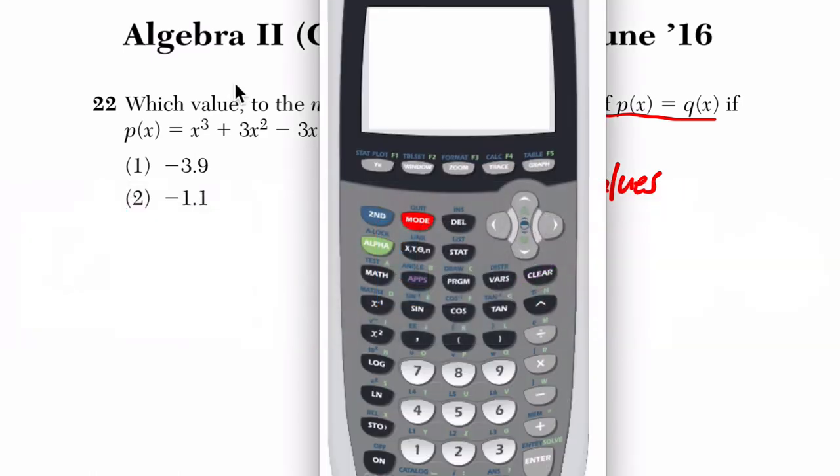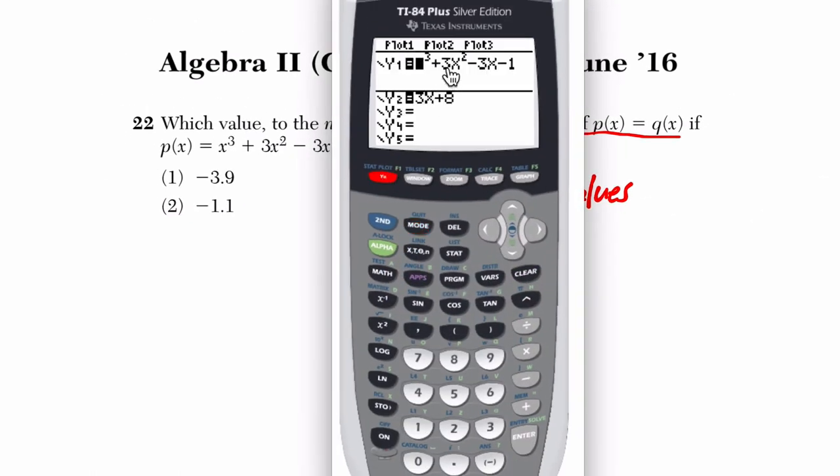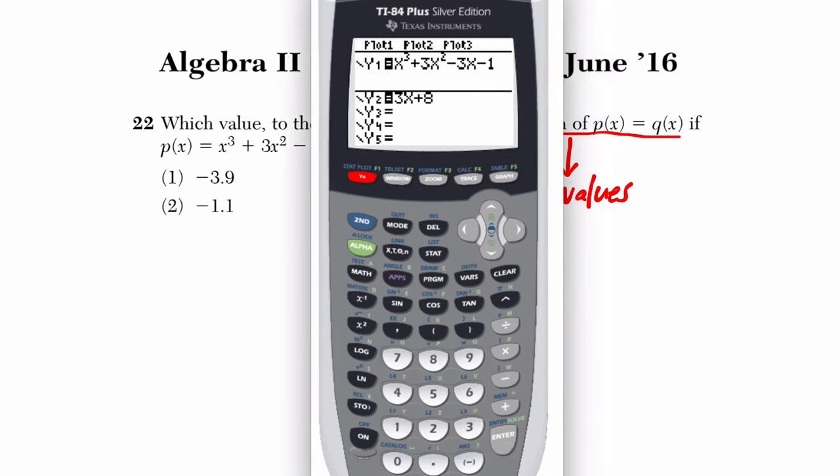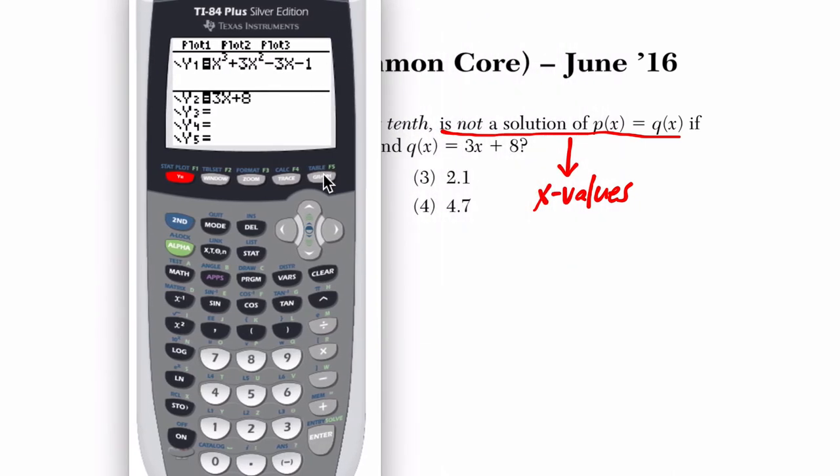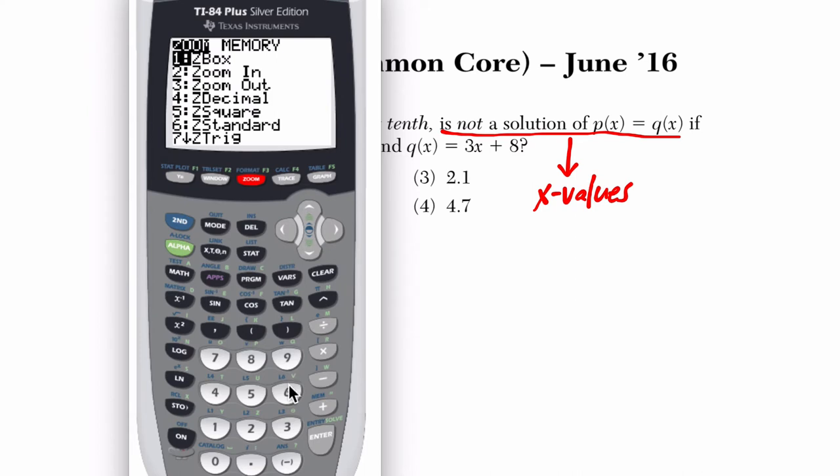So let's go to our calculator here. If I press y equals, I've got my equation entered already, save a little bit of time. And then before I even press the graph button, I press zoom 6 to give a standard kind of zoom and sense of where the function is.